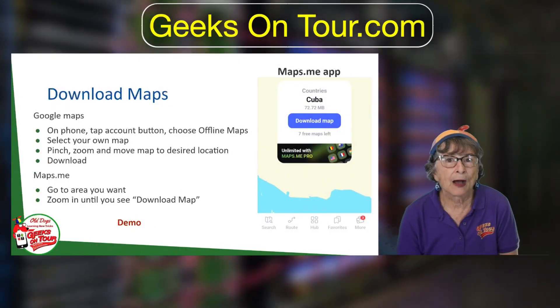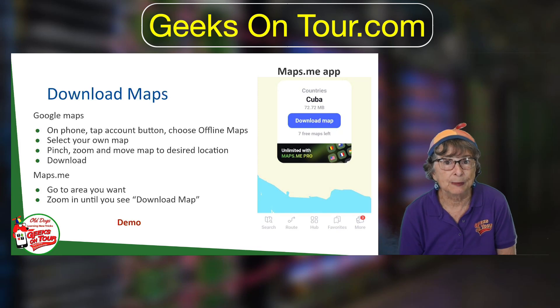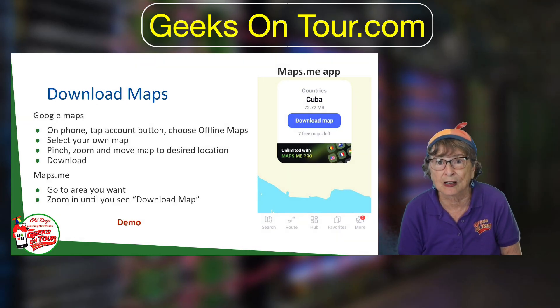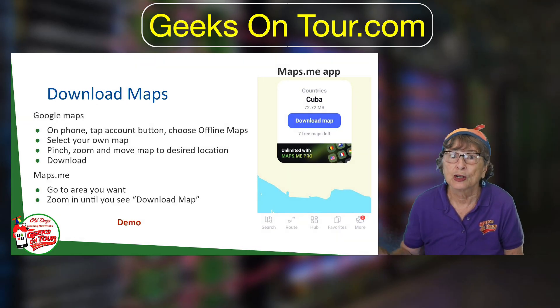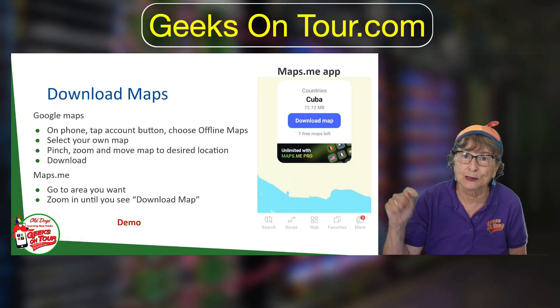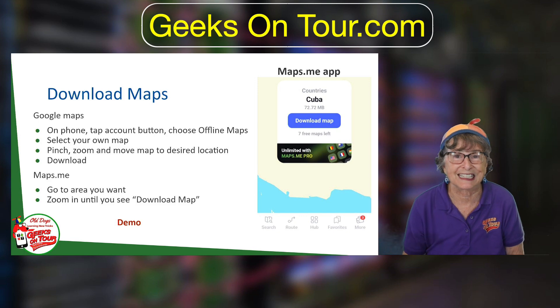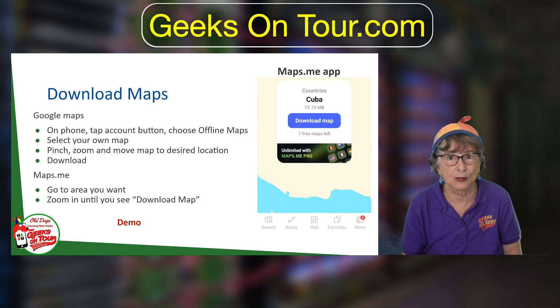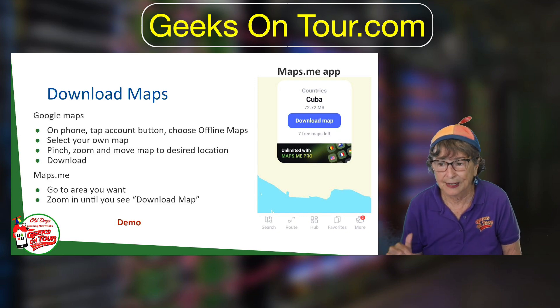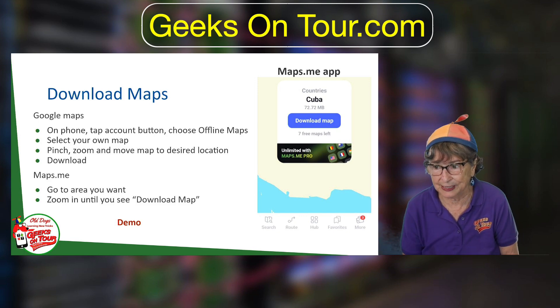Maps. Now maps can be very important if you are renting a car somewhere. You absolutely want to make sure you have maps even if you don't have connectivity.